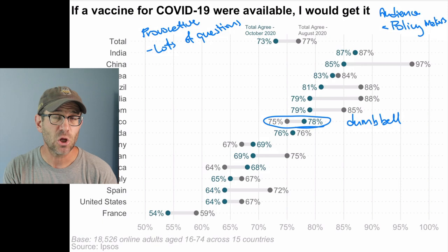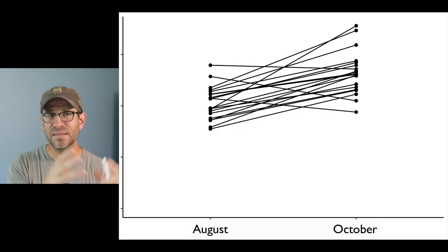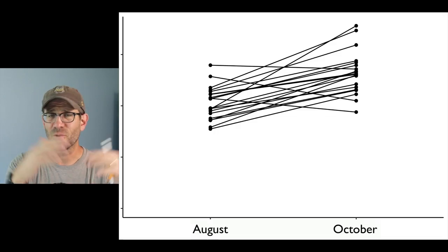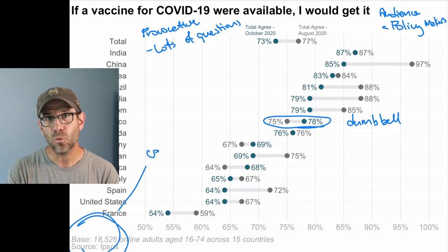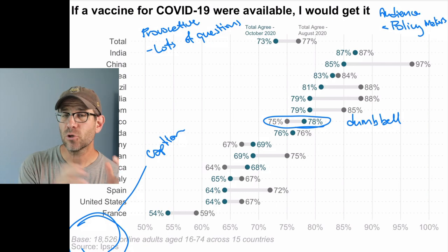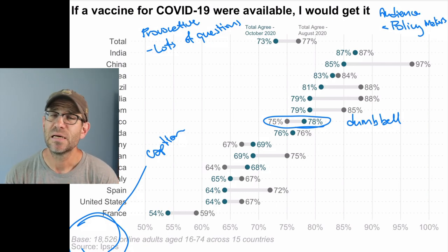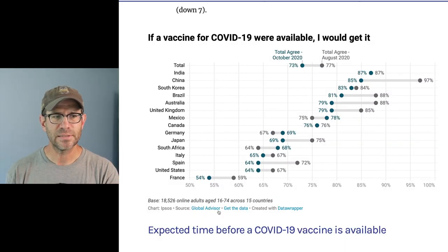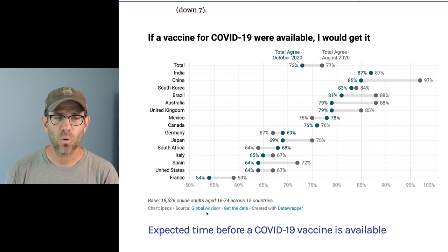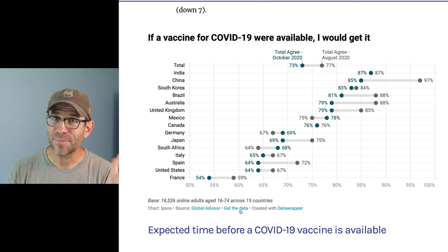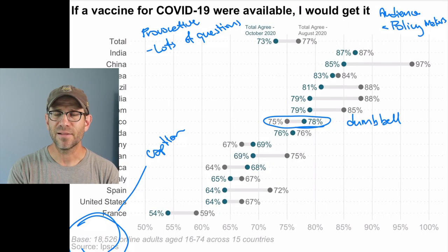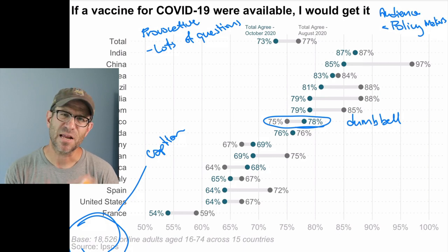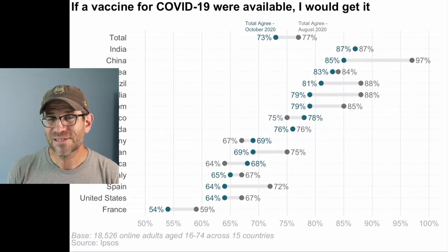A slope graph might get a little too busy because the country names might run into each other. I also really liked the caption — they told me the number of individuals, the ages, the countries, the source, how they created the data, and how you can access it. I really like what they built into the caption; they didn't need a lot of words but it was really effective.